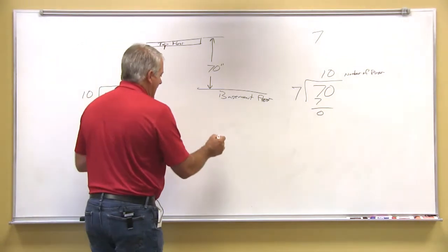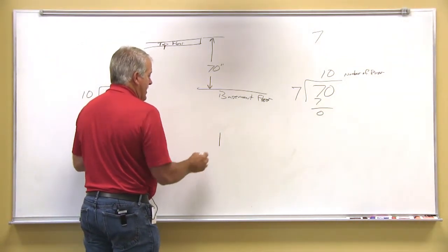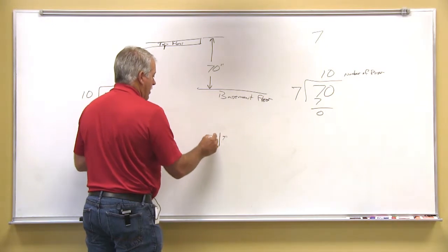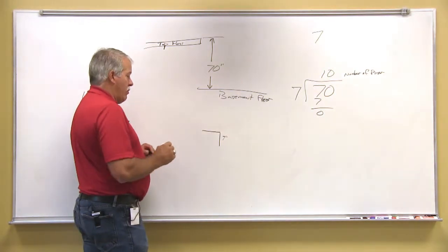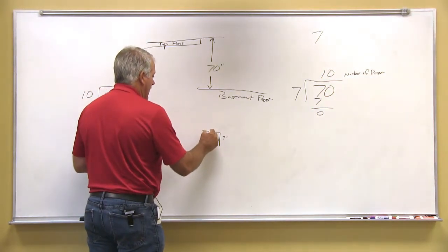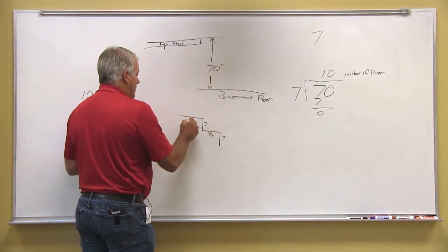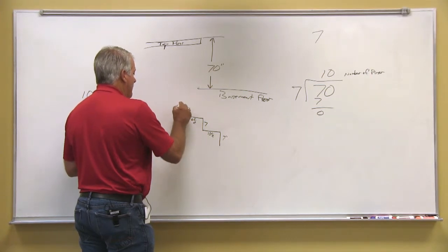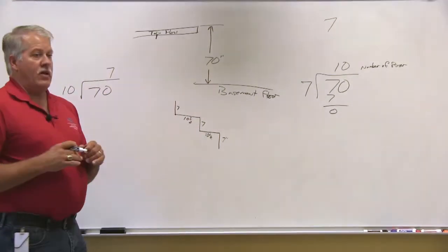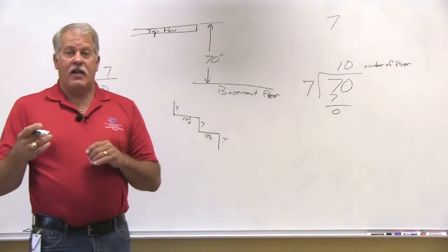So when we lay out our stairs, we're going to come up 7 inches. We're going to come over the tread width, which is usually 10 and a half. We're going to come up 7, over 10 and a half, up 7. And we're going to do that until we have a total of 10 rises.